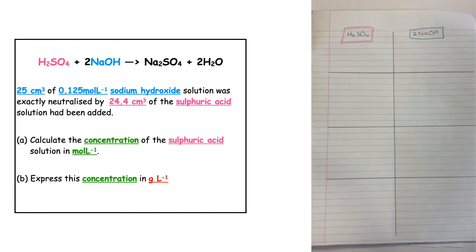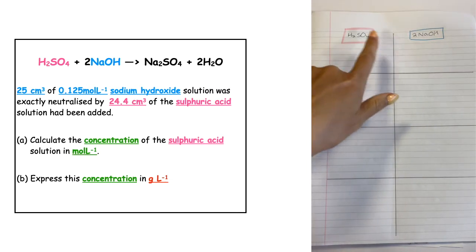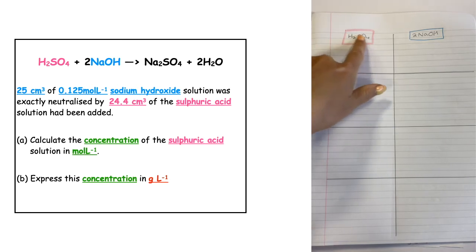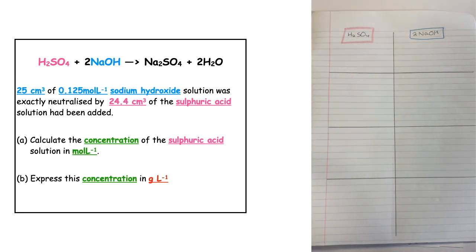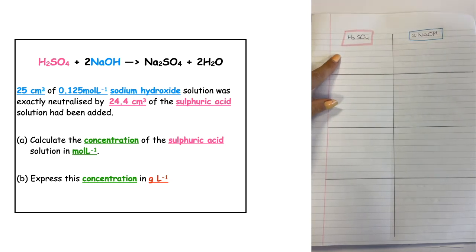In this question we've got 25 centimeters cubed of a 0.125 mole per liter sodium hydroxide solution, and it was exactly neutralized by 24.4 centimeters cubed of our sulfuric acid. Part A of the question wants us to calculate the concentration of the sulfuric acid.